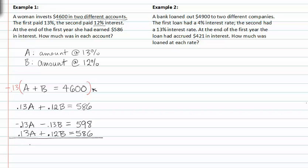Adding across, the A's add to zero. The B's are negative 0.01B, and that equals 12. Dividing by negative 0.01 on both sides, I get B is equal to 1200.